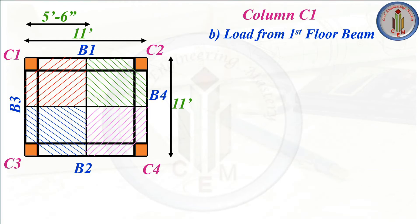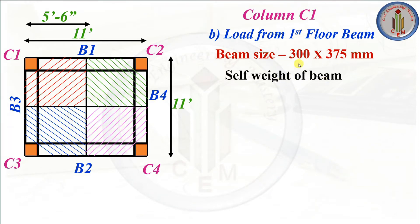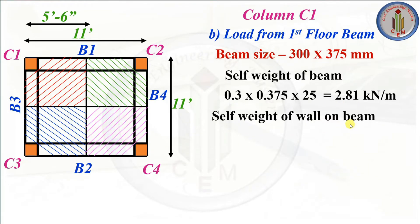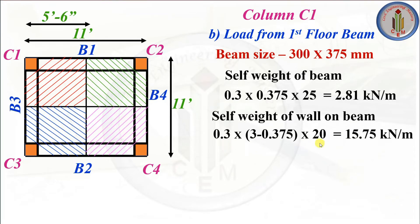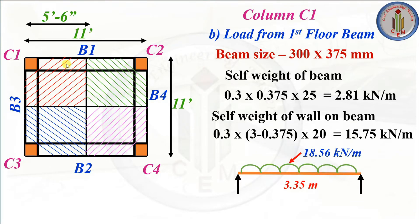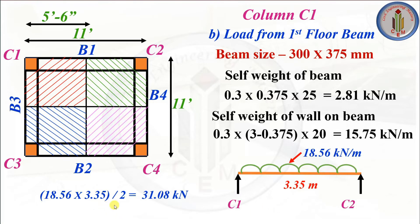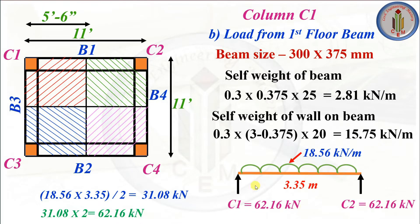Next, let's calculate the load from the first floor beam. It uses the same concept as the plinth beam. The beam size is 300 × 375 mm. The load coming on the beam is 18.56 kN/m. Using WL/2, and accounting for both B1 and B3, the total comes to 62.16 kN on column C1. Column C2 also receives 62.16 kN.